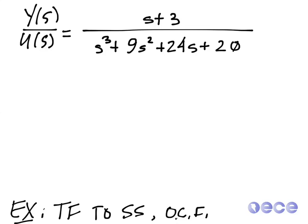This transfer function was used in a previous example for going to controllable canonical form, but here we're going to observable canonical form. By inspection, I can label the coefficients. So b0 is here, b1 is here — it's actually hidden, it's a 1, so it's implicit. Here is a0, a1, and a2. Remember for observable canonical form, we always require this leading coefficient to be a 1, so we divide through by whatever A3 would have been in order to put the system in the correct form.